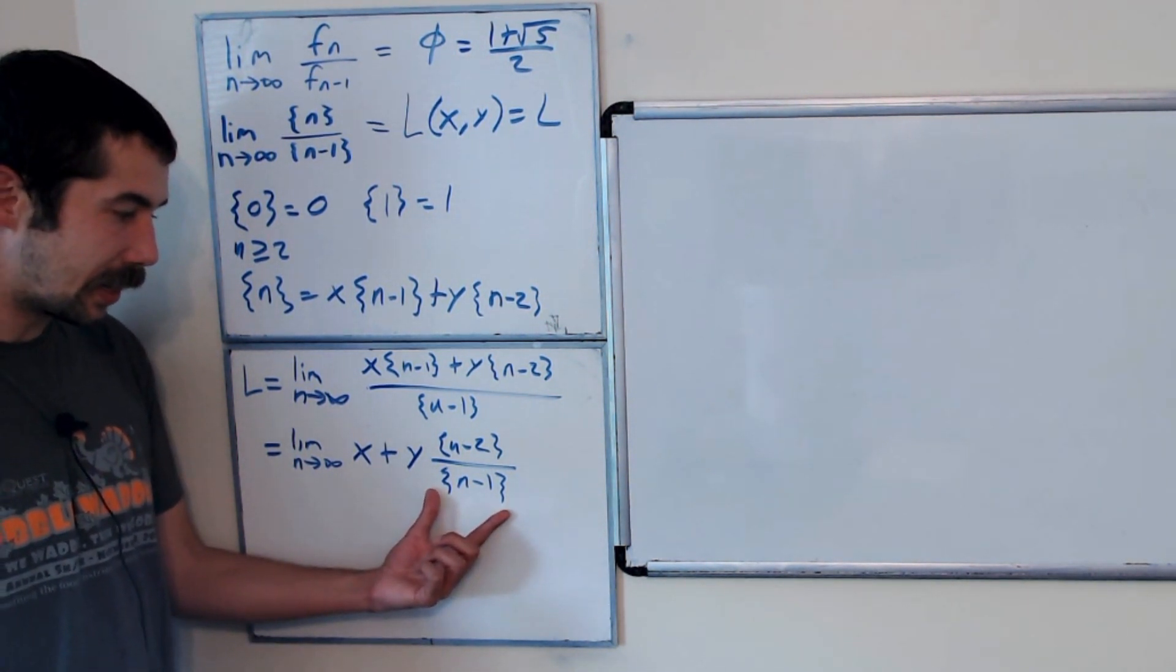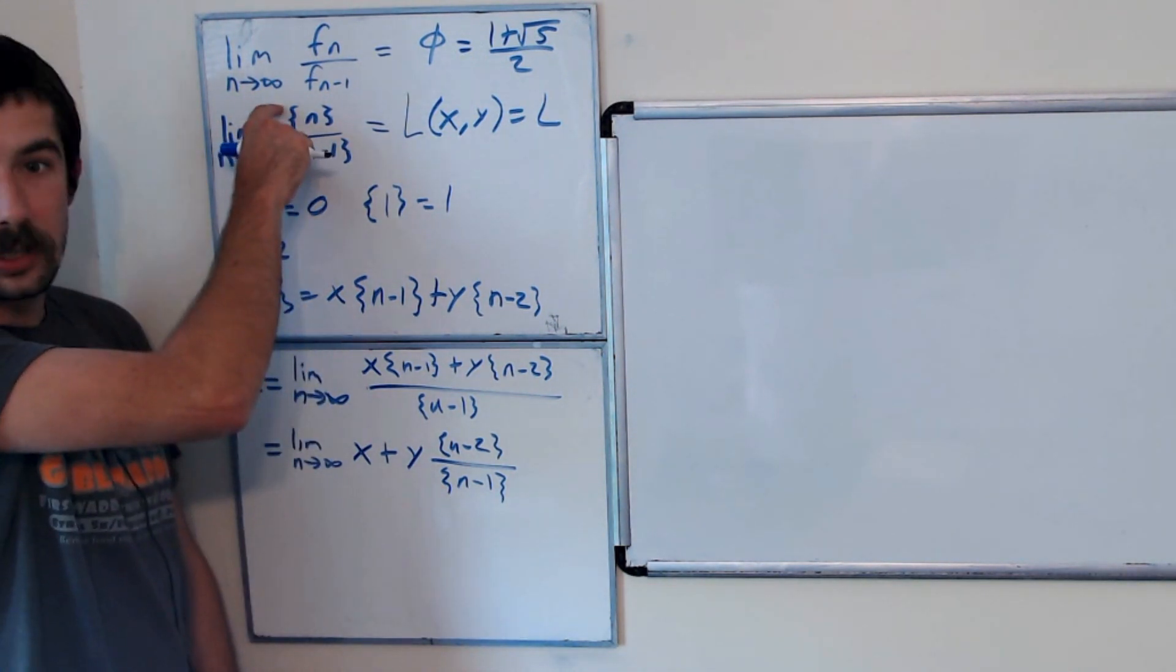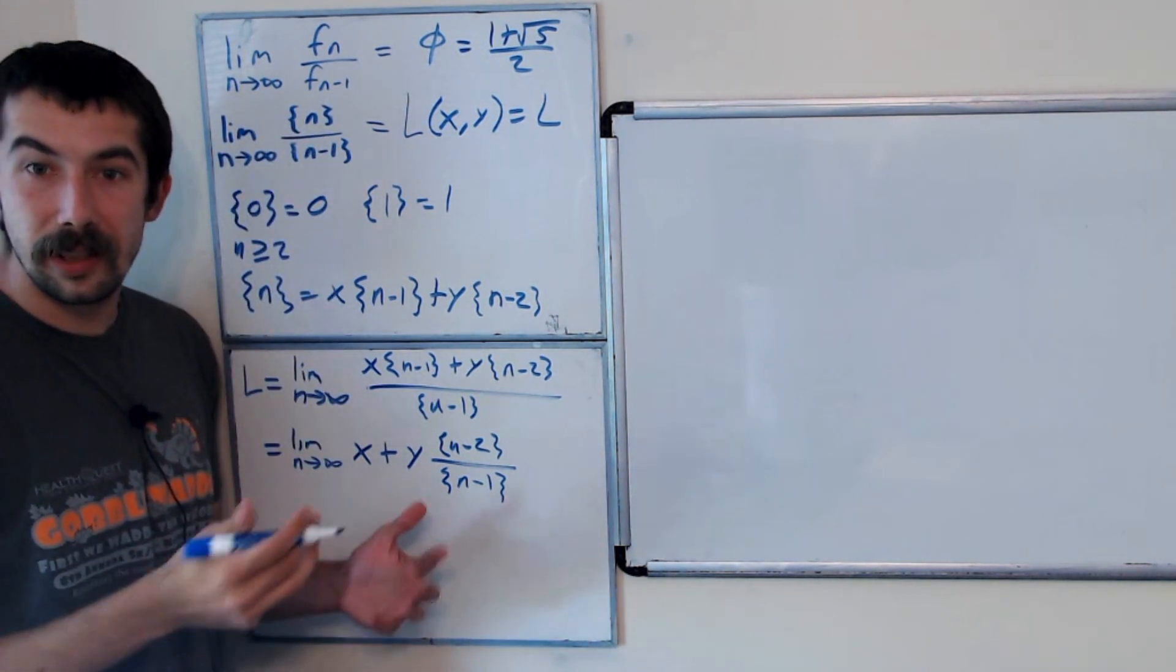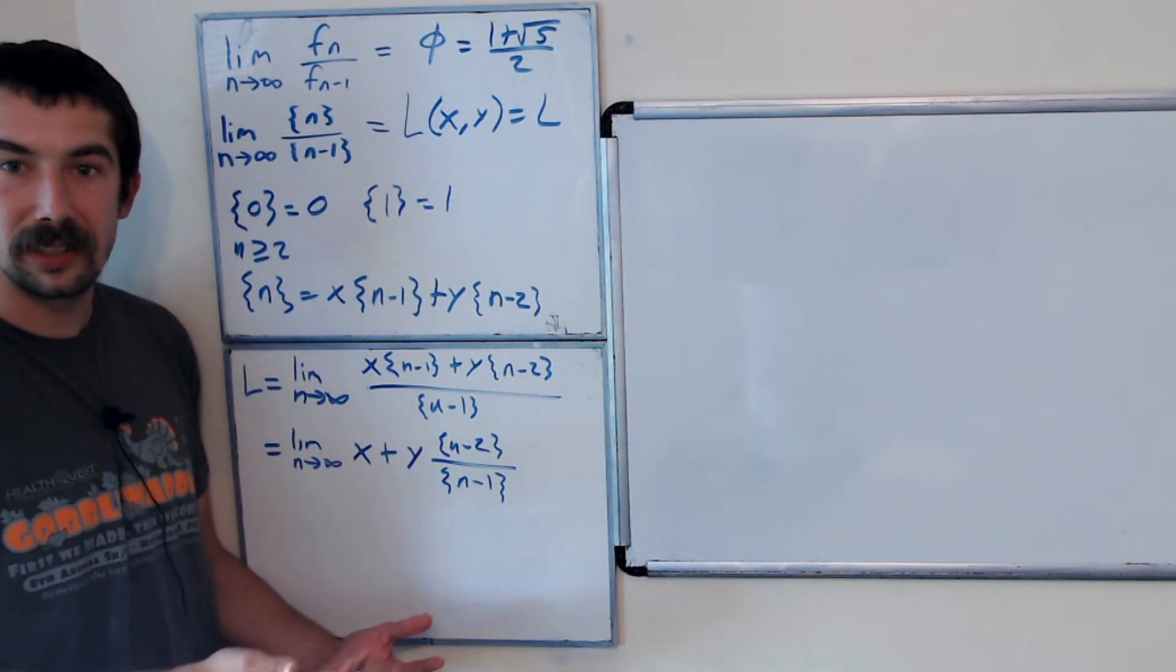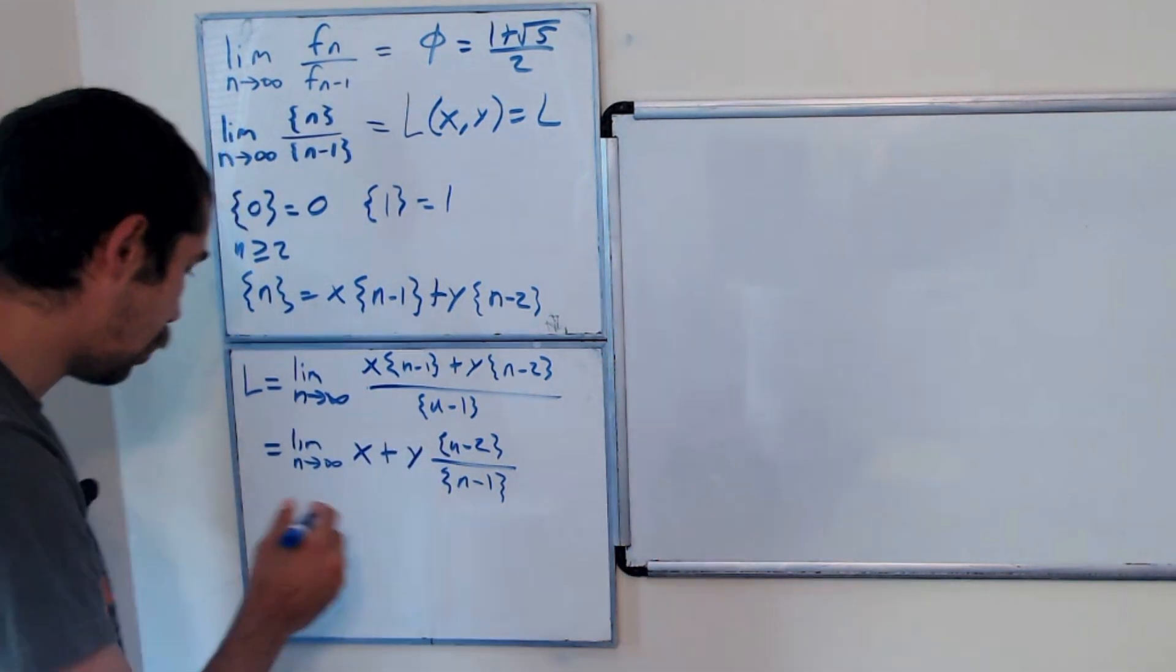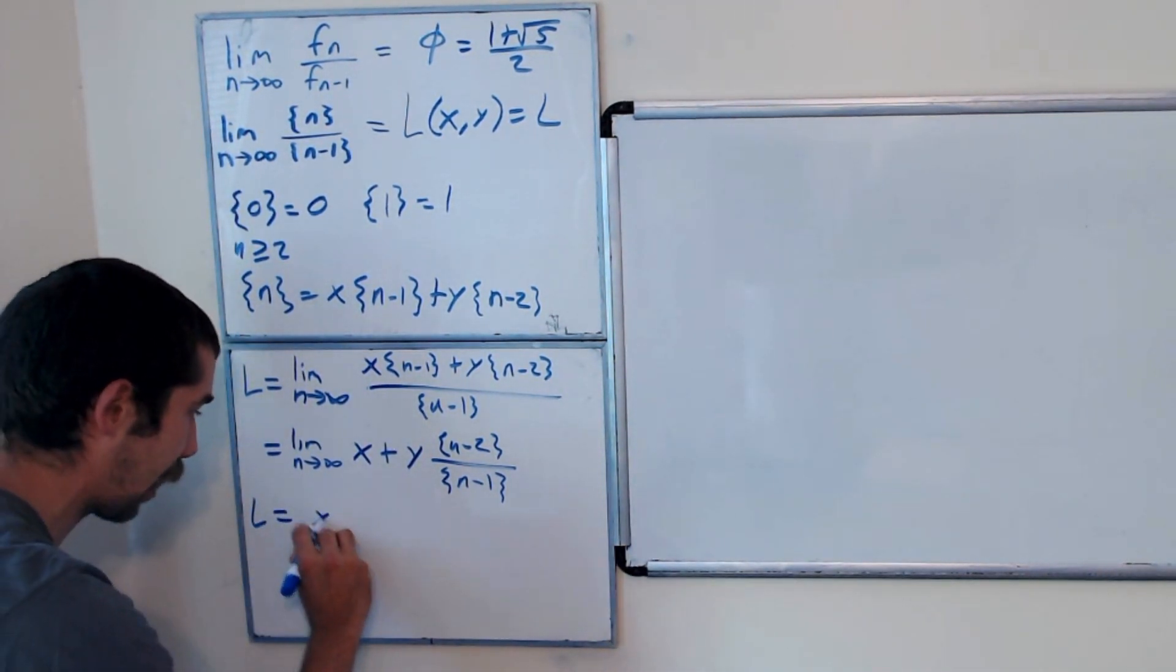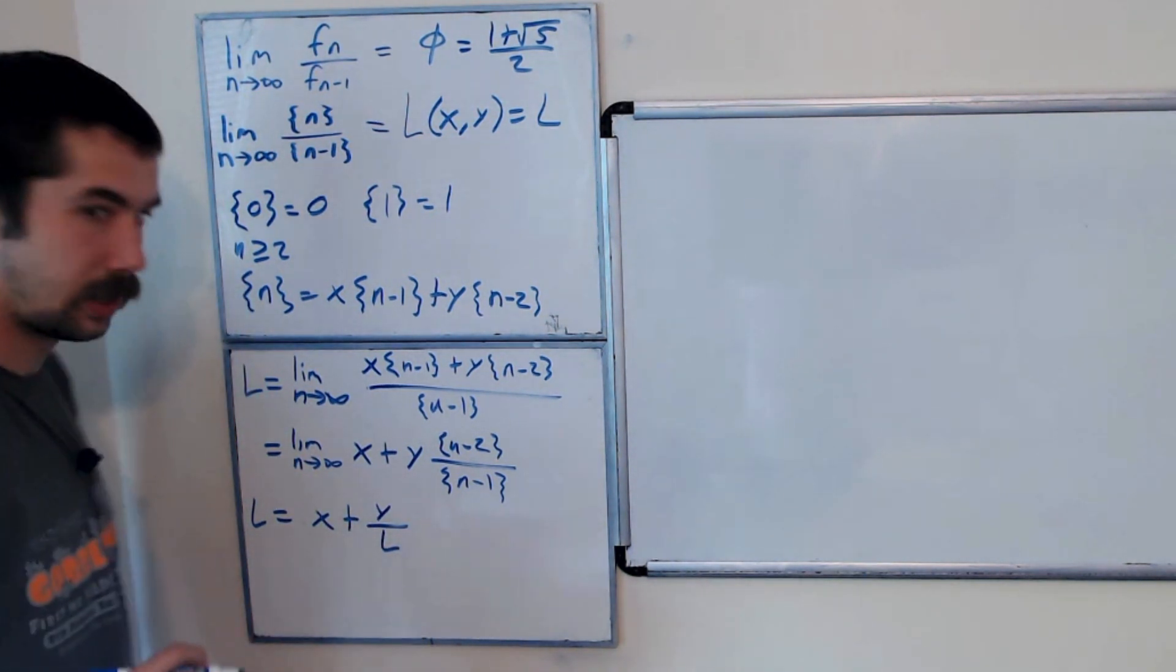But this quantity here is just the reciprocal of this fraction. I mean sure, our n's are off by 1, but since we're taking the limit as n goes to infinity, it doesn't really matter. So this is just 1 over L here. So L is equal to x plus y over L.